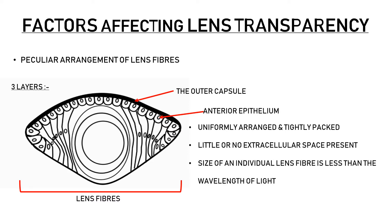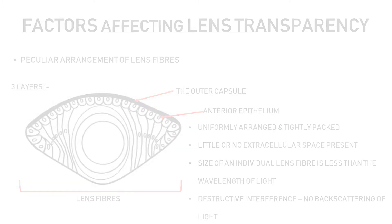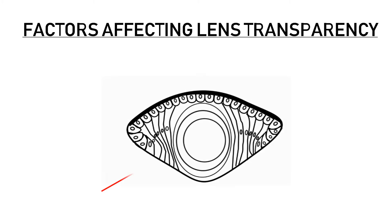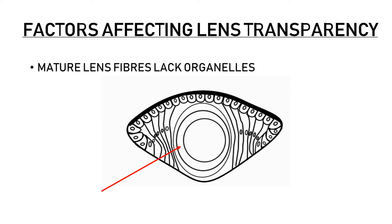This tight packing ensures that little or no extracellular space is present between these cells. Also, the size of an individual lens fiber is less than the wavelength of light. Because of the phenomenon of destructive interference, there is no backscattering of light, making the lens a transparent structure. The lens fibers present in the center of the lens are the oldest and most mature. Mature lens fibers lack organelles like nuclei, mitochondria, and endoplasmic reticulum, and this absence of organelles also reduces light scattering and contributes to lens transparency.